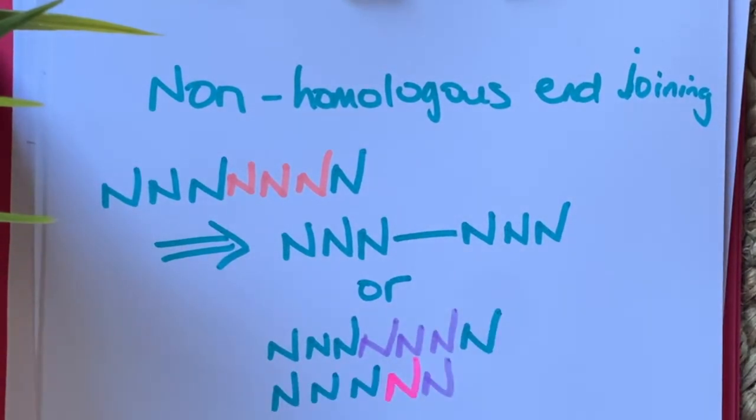So if the cell fixes it perfectly, Cas9 will go back and cut it. And this is why it can create insertions or deletions as the cell tries to fit the two ends back together. If you get insertions or deletions, this can lead to frame shifts in the open reading frame of the transcript, and this will cause premature termination of a messenger RNA transcript.